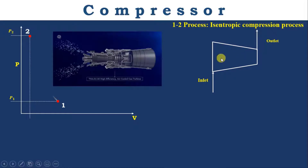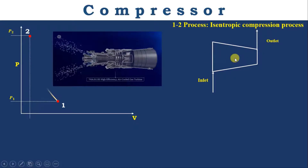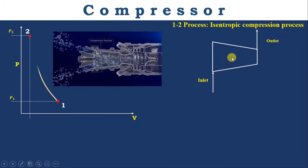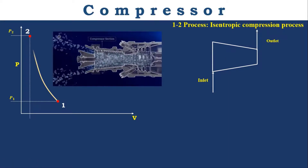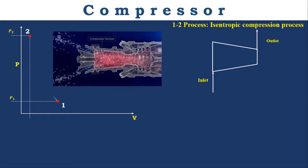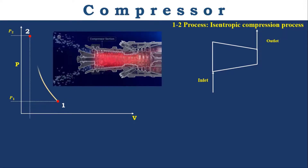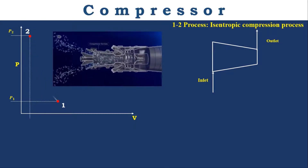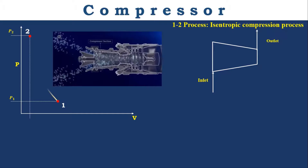The compressor is an open system in which energy and mass can cross the boundary of the system. That energy may be electrical energy or shaft work, and the mass is nothing but air. We know that the compressor is a work-consuming device, so we need to find out the work given to the compressor.